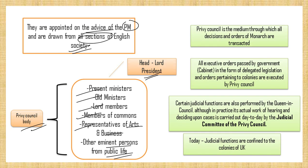The Privy Council is the medium through which all the decisions and orders of the monarch are transacted. All executive orders passed by the government — that is, the Cabinet — in the form of delegated legislation and orders pertaining to colonies are executed by this Privy Council.